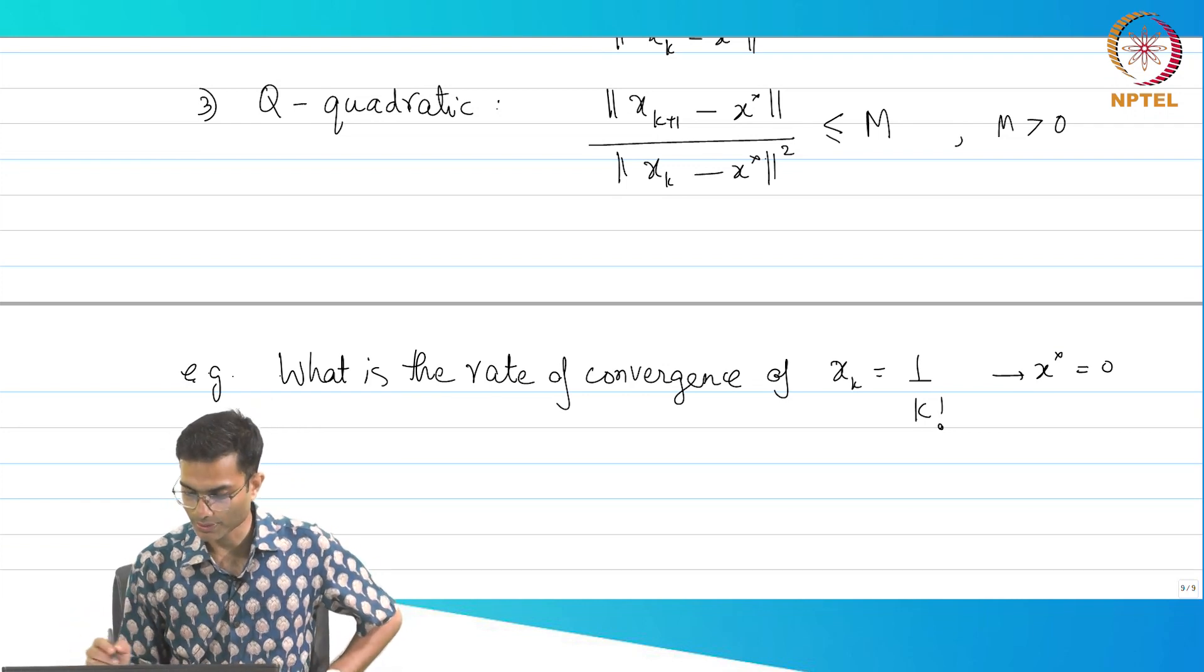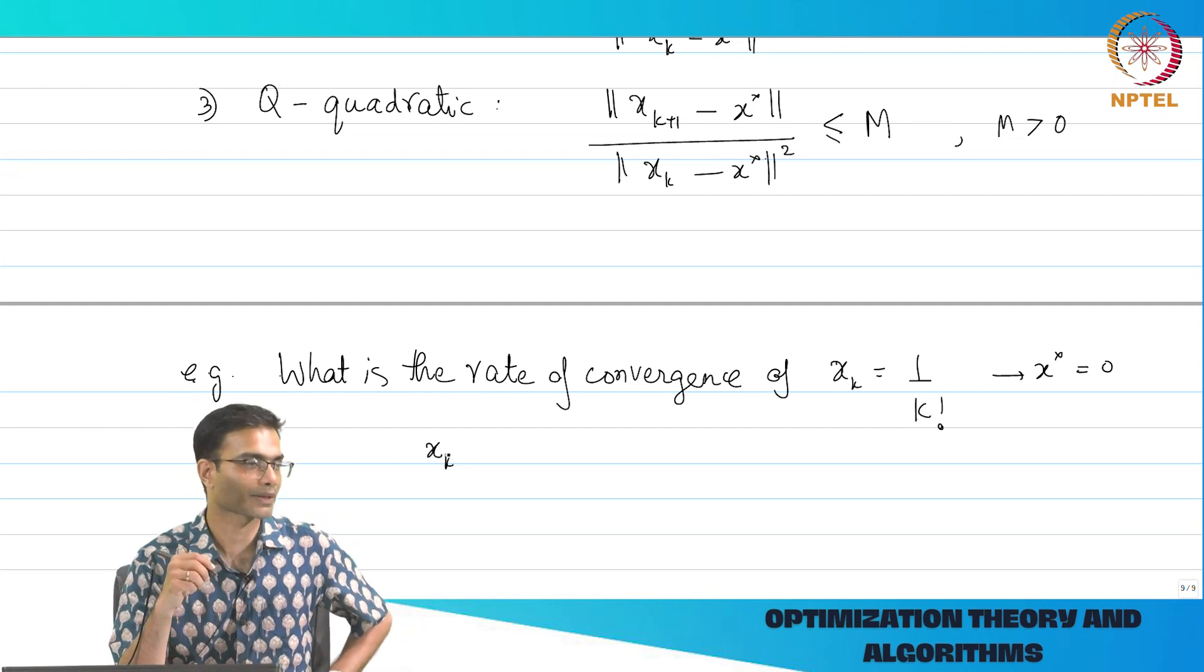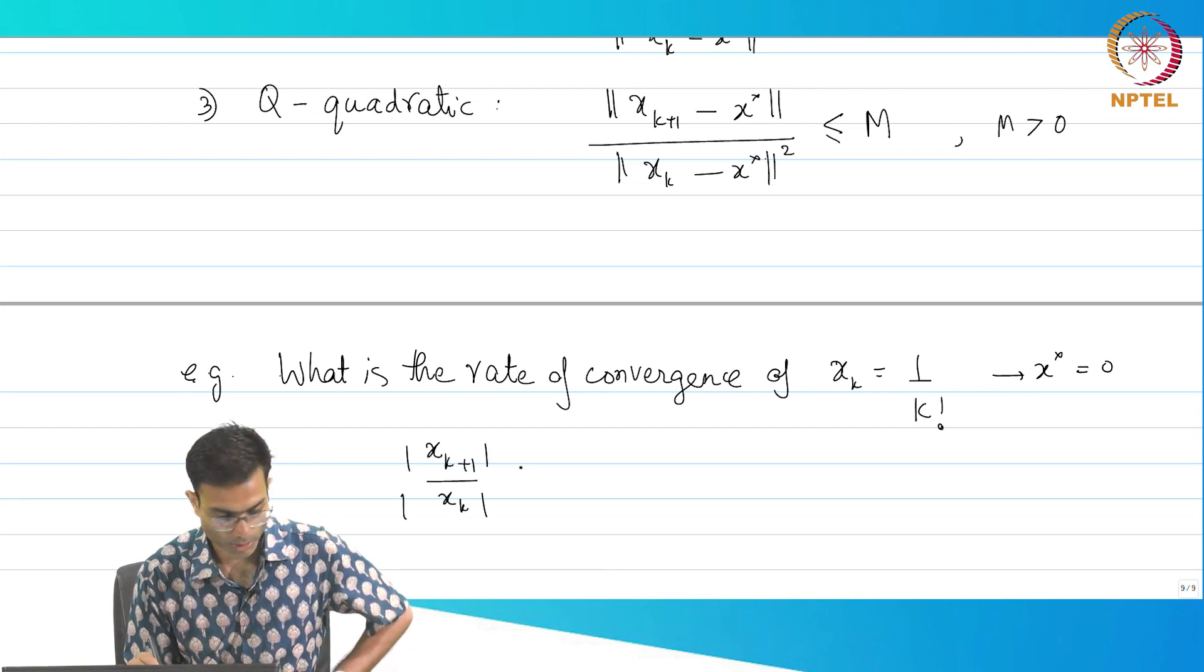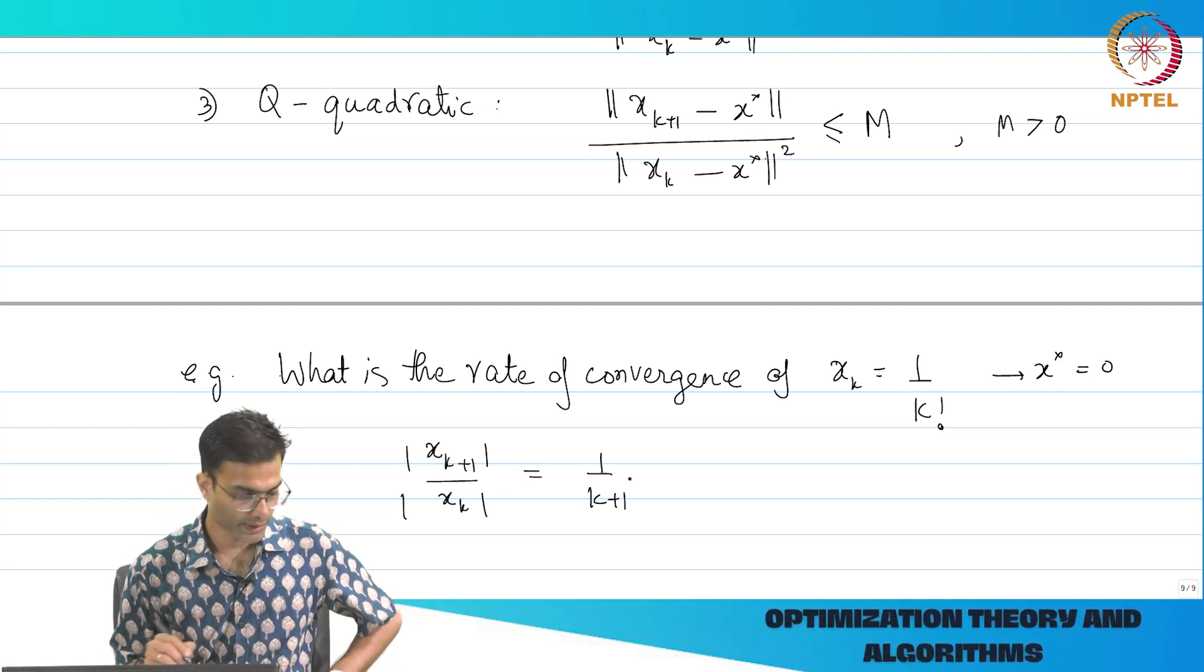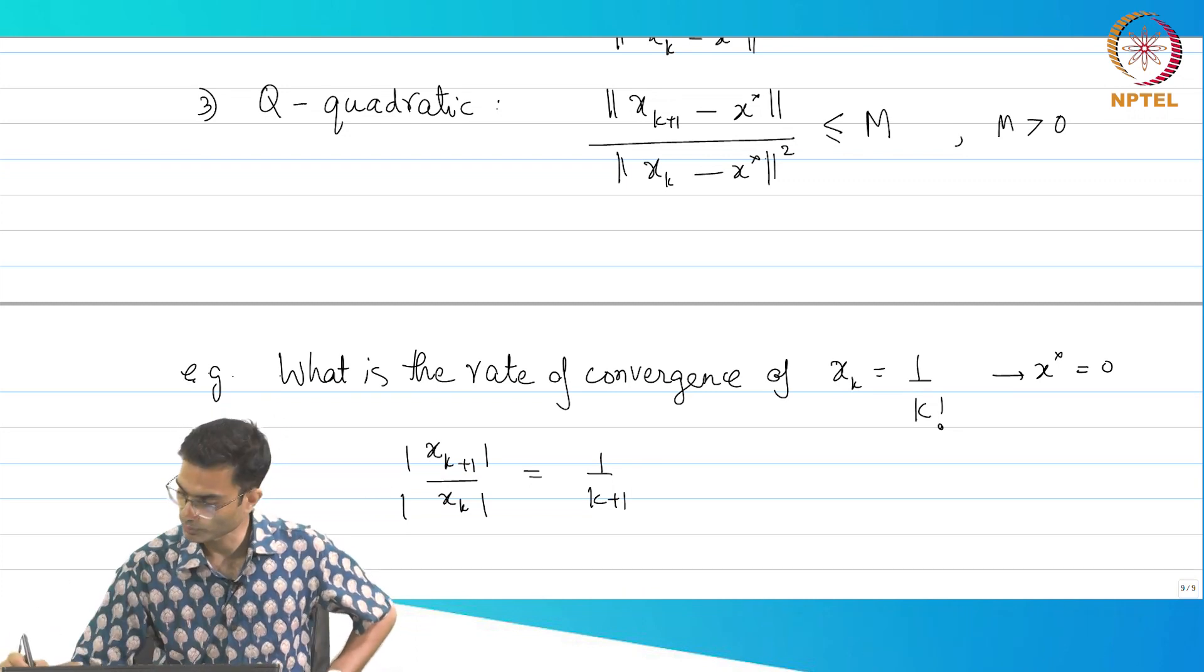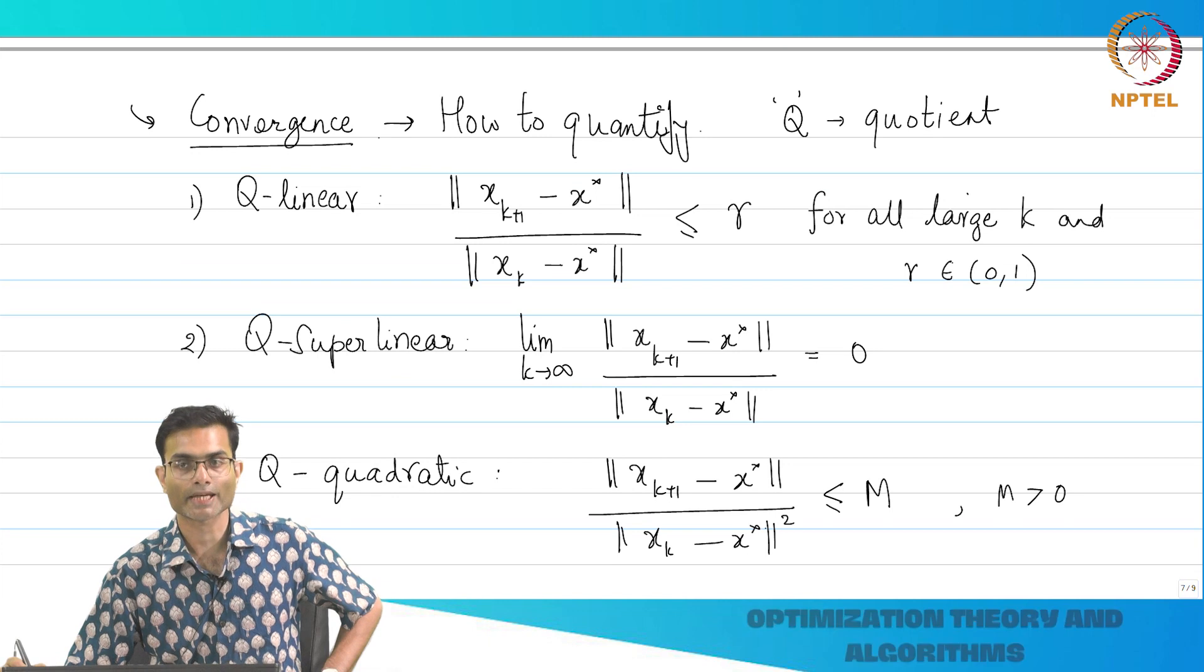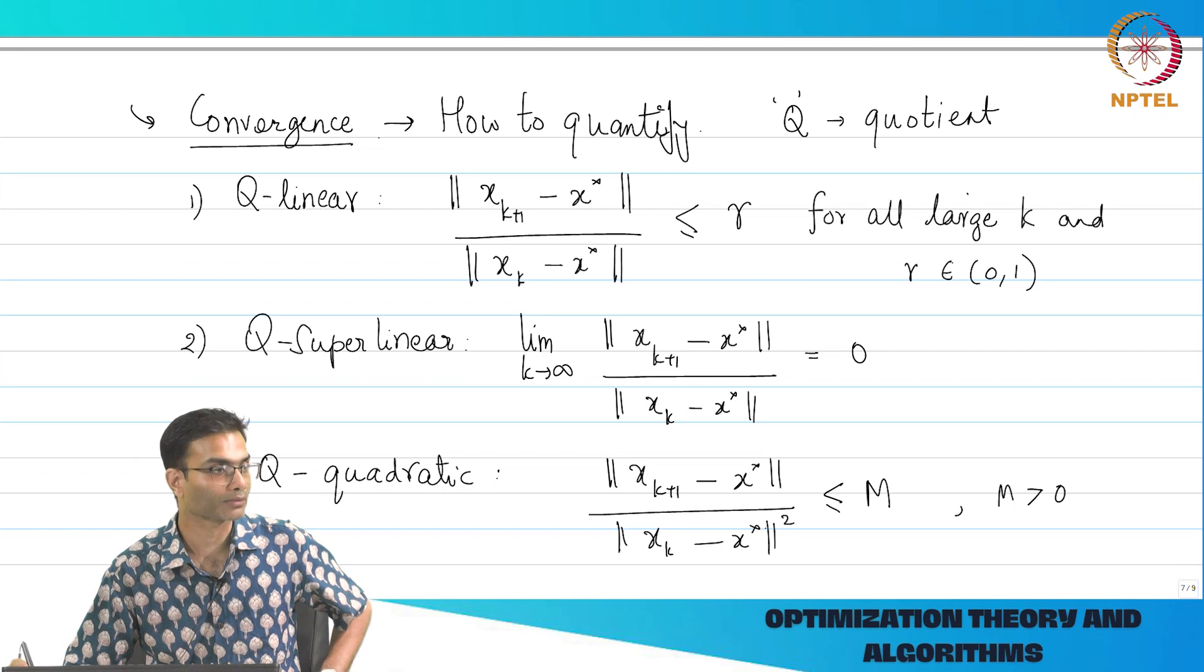So let us take our... In this case it is a scalar sequence, not a vector sequence, so I do not need norm. So if I take for example x_{k+1} by x_k, what am I going to get? 1 by k plus 1, right. Now, 1 by k plus 1, what can I say? Look at the definitions. 1 by k plus 1 as k tends to infinity tends to 0, right. So this is super linear.